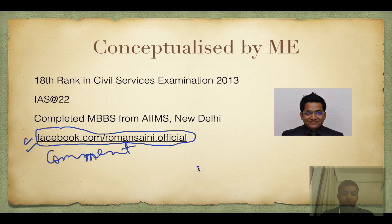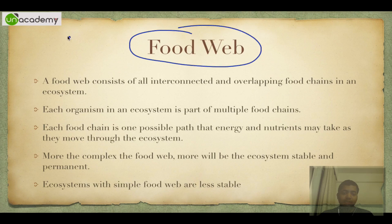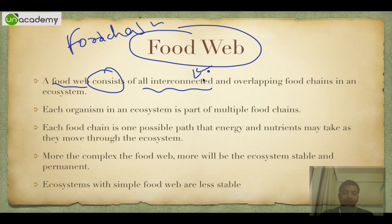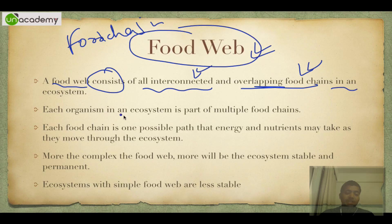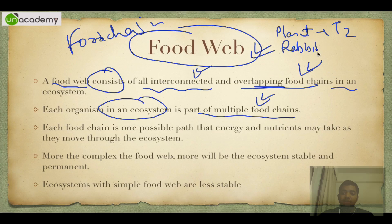Moving forward, this is related to the food web. Last time I stopped at food chain. A food web consists of all the interconnected and overlapping food chains — this is what exists in nature, not a simple food chain. Each organism in an ecosystem is part of multiple food chains. For example, if you eat plants you come at T2, if you eat rabbit you come at T3.